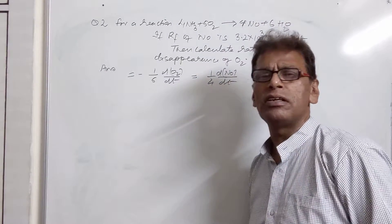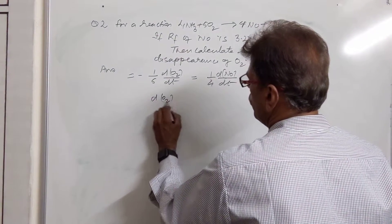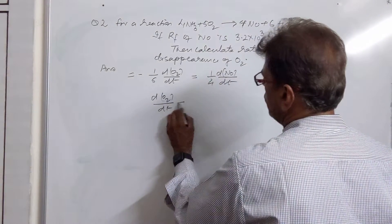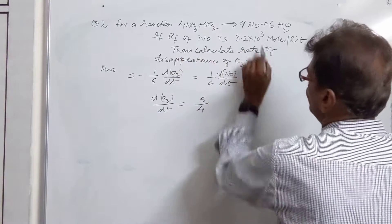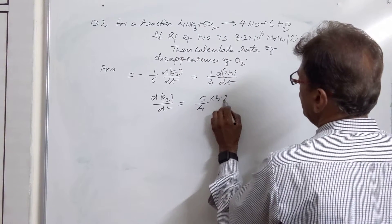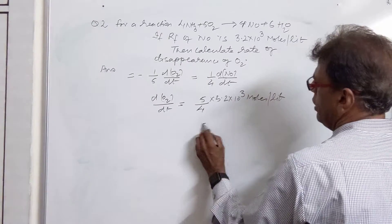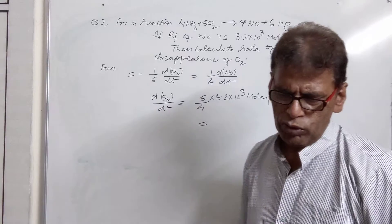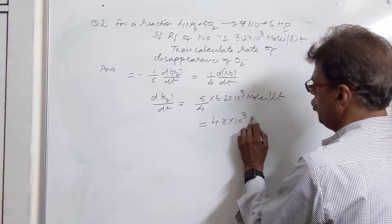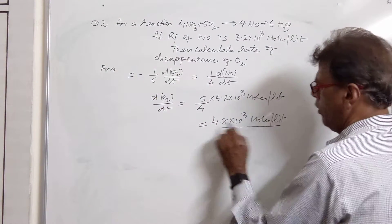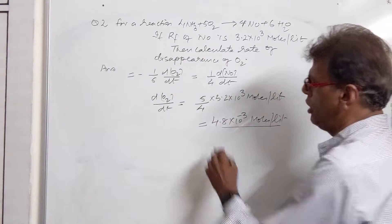So d[O2]/dt = (5/4) × d[NO]/dt. Putting in the value of d[NO]/dt = 3.2 × 10⁻³ moles per liter, the rate of disappearance of O2 = 4.8 × 10⁻³ moles per liter. This is the result for this numerical problem.